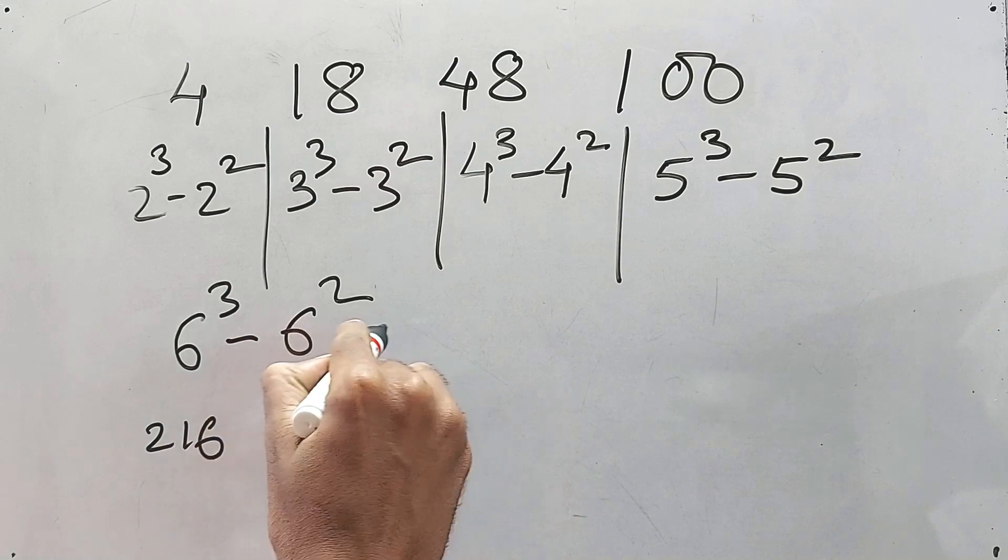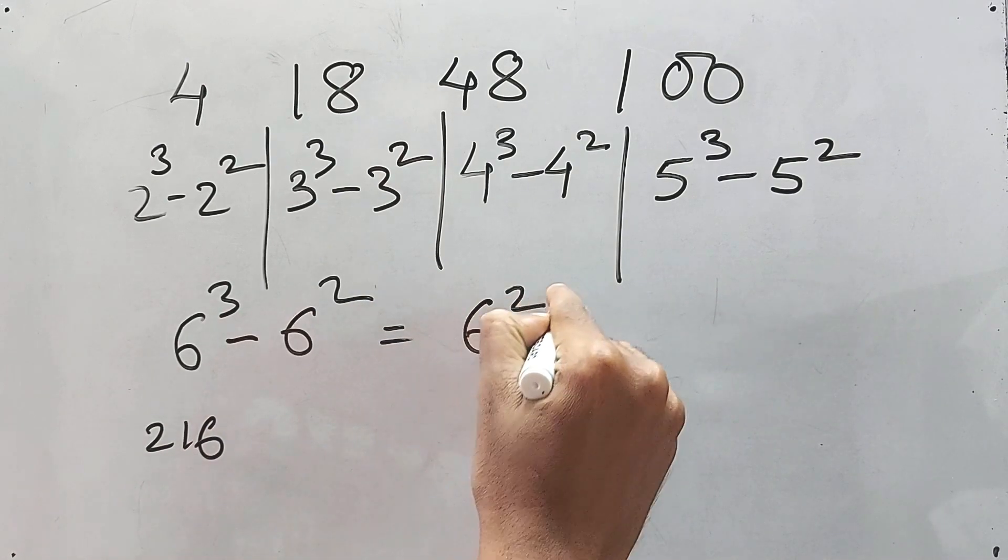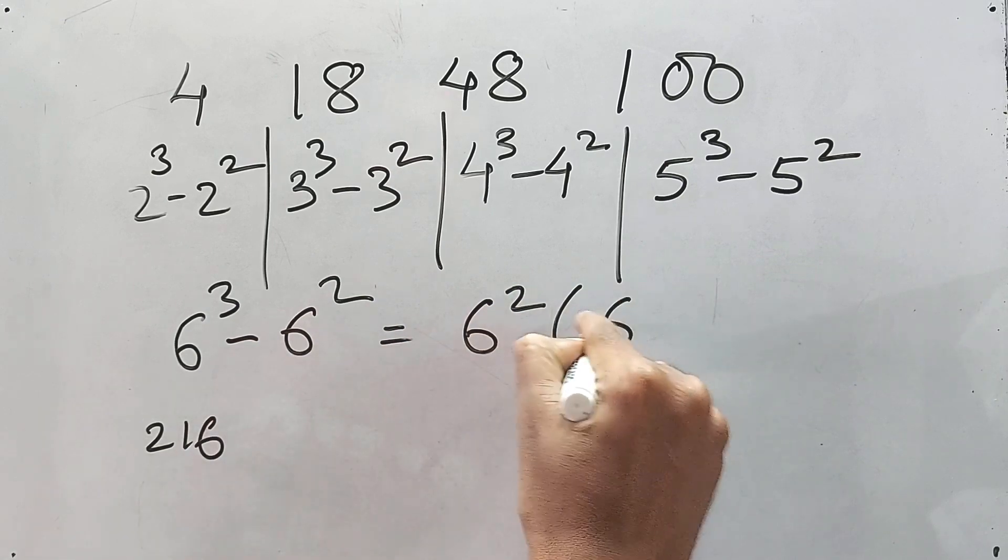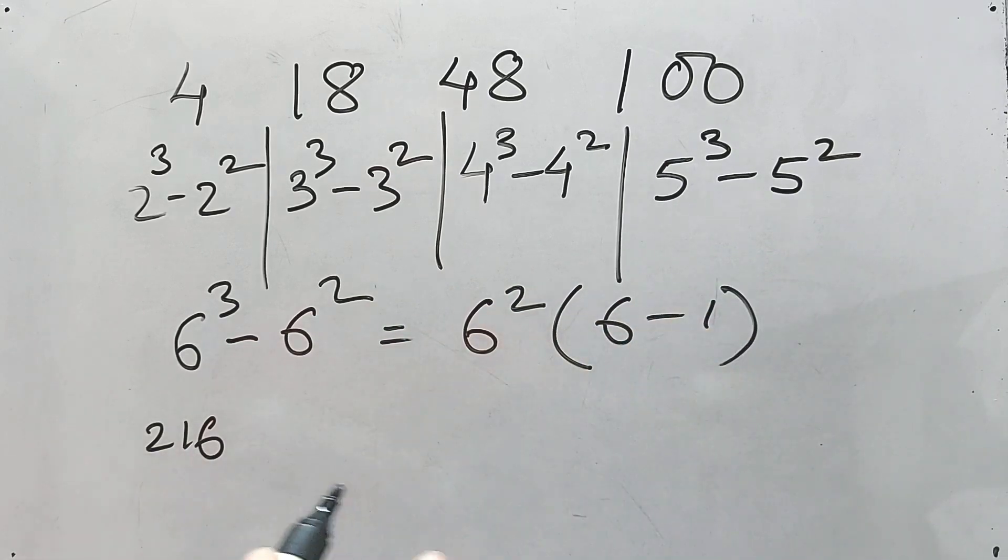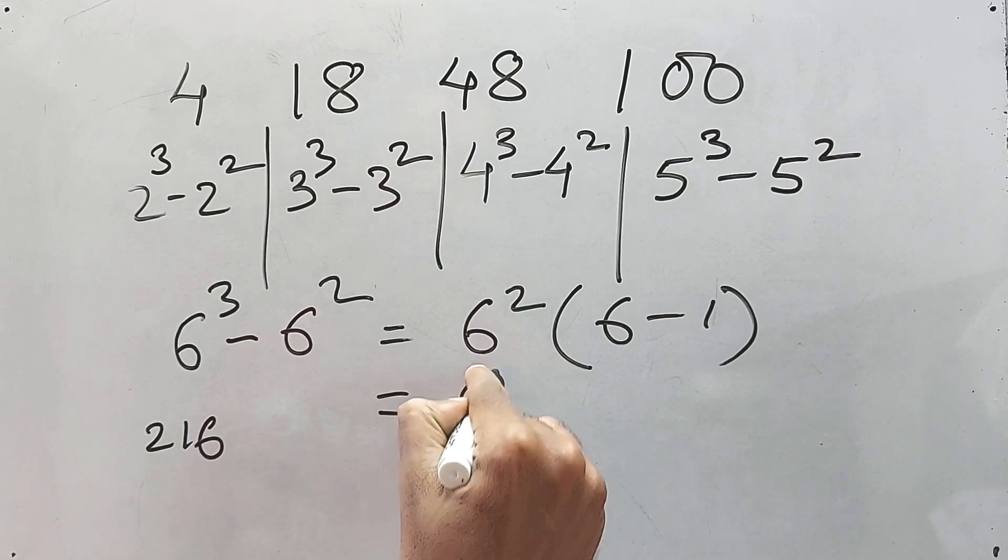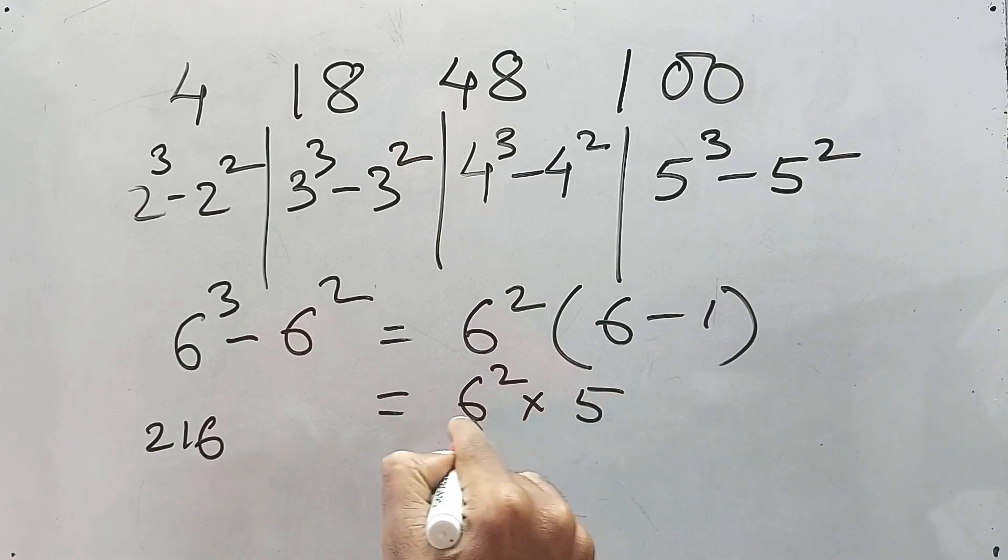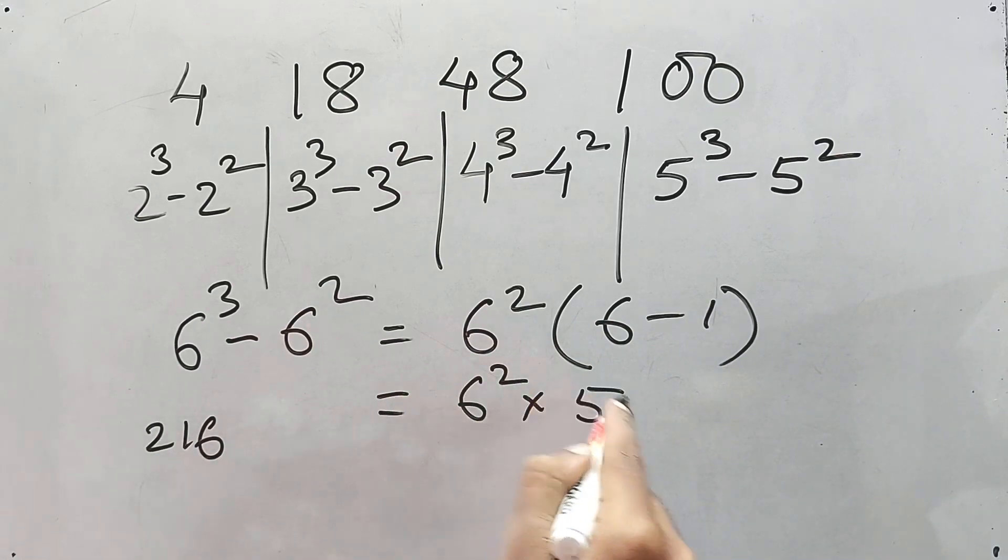That is, just take common of the 6 square and 6 minus 1, right? This is another way. I'm just telling you another shortcut. So 6 square into 6 minus 1 is 5. 6 square is 36. 36 into 5 is 180.